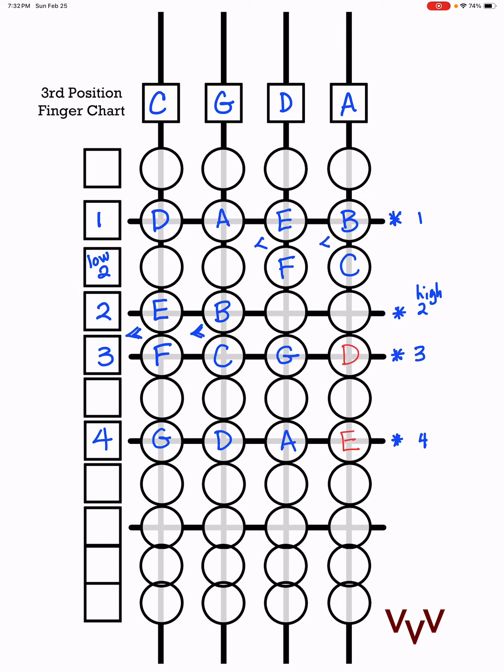D string, half step is between one and two here. And then A string, also between one and two. So just a little bit about finger geography in the C major scale.